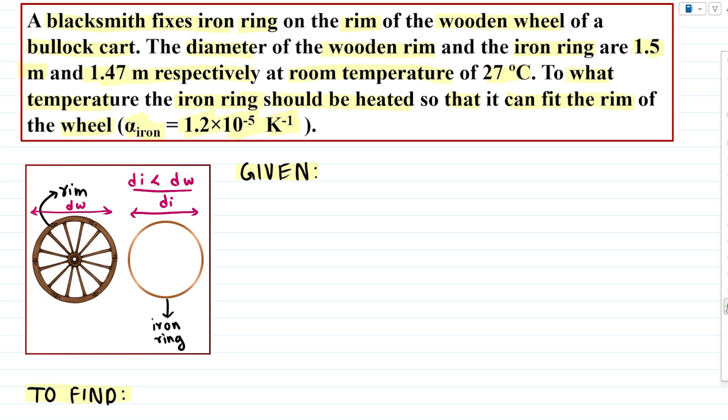So now according to this data, we have the diameter of our wooden rim and iron ring. The wooden rim diameter is slightly greater than our iron ring diameter. We will heat this iron ring so it will increase its diameter and we will place it on the wheel. But what temperature do we need to heat? That's what we have to find. And now that we have understood what is happening in the question, we can solve this question in quite easy way.